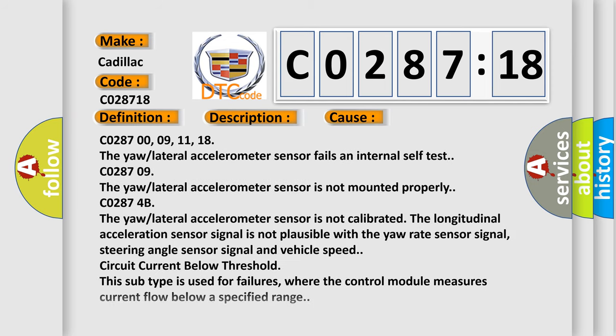This diagnostic error occurs most often in these cases: C028700, 09, 11, 18 - the yaw lateral accelerometer sensor fails an internal self-test. C028709 - the yaw lateral accelerometer sensor is not mounted properly. C02874B - the yaw lateral accelerometer sensor is not calibrated. The longitudinal acceleration sensor signal is not plausible with the yaw rate sensor signal, steering angle sensor signal, and vehicle speed.